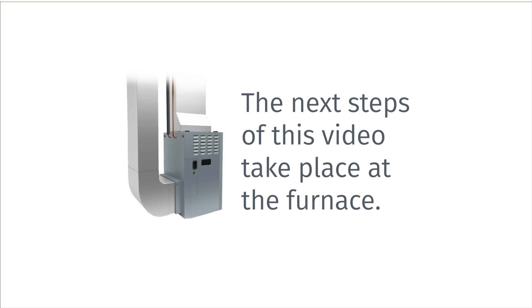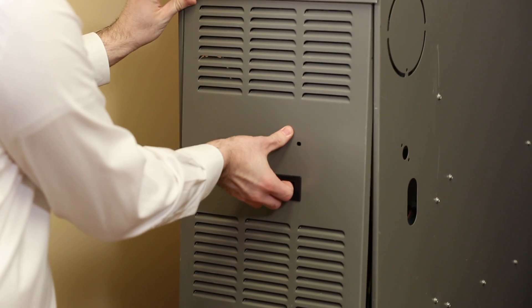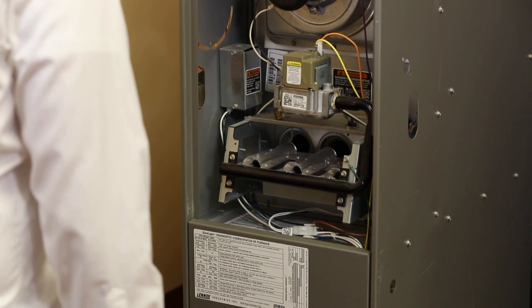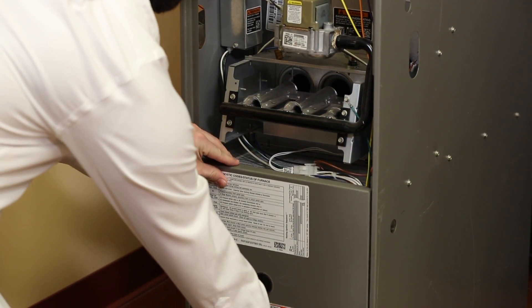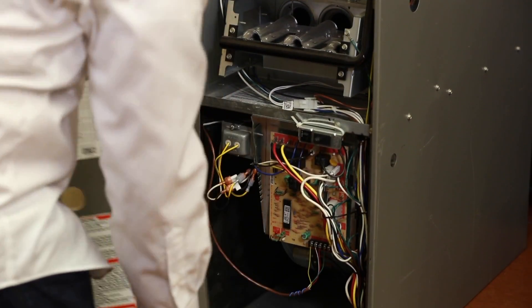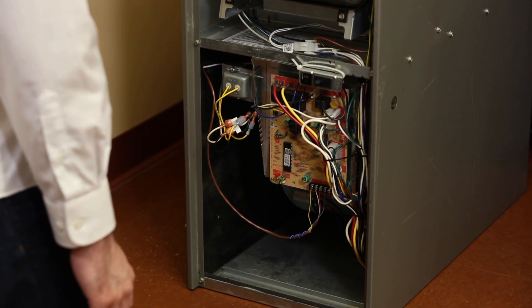Now let's look at the same unused C wire in your furnace. All units have a door or panel you can remove to gain access to the furnace control board. Sometimes this door slides off, and other times there are small screws you need to remove.